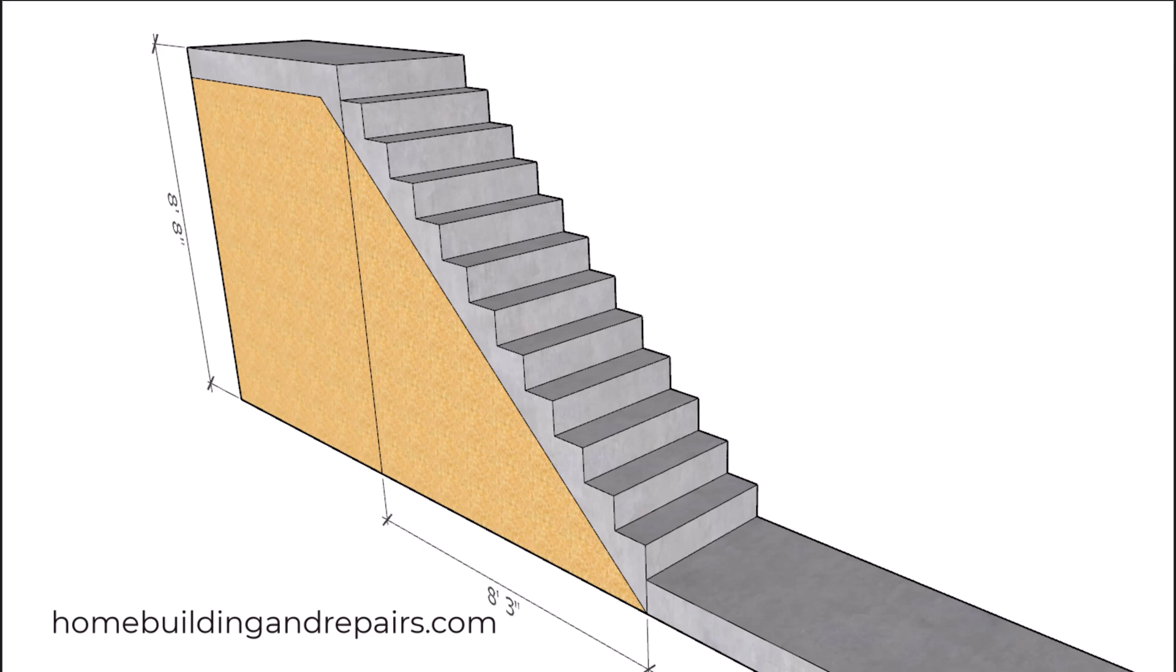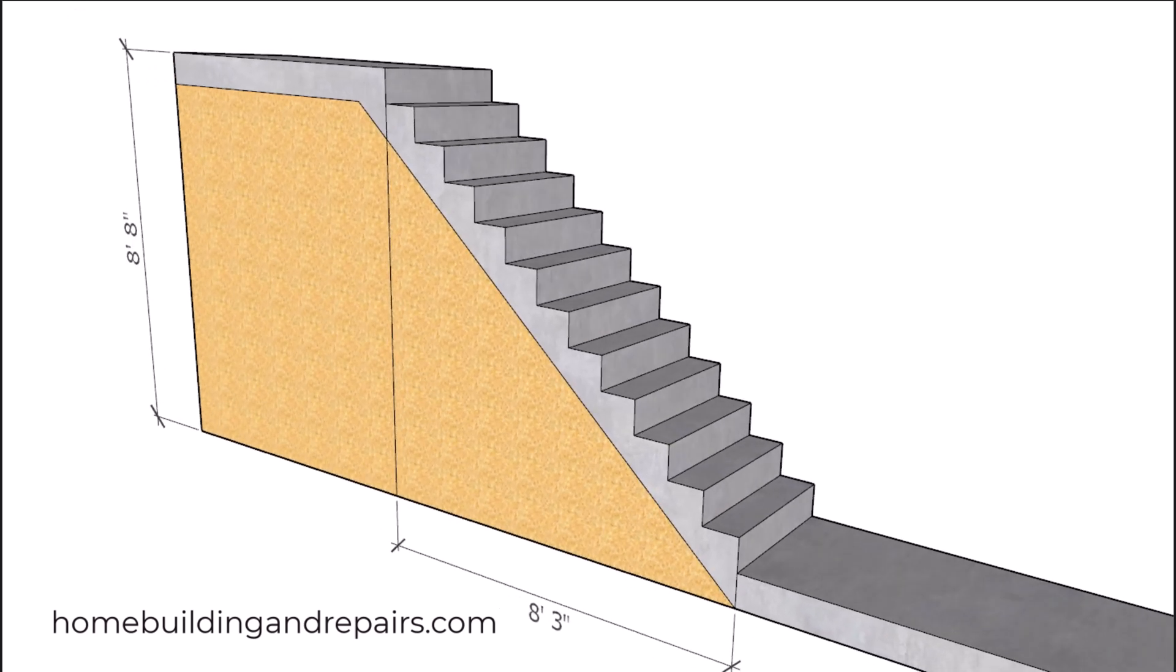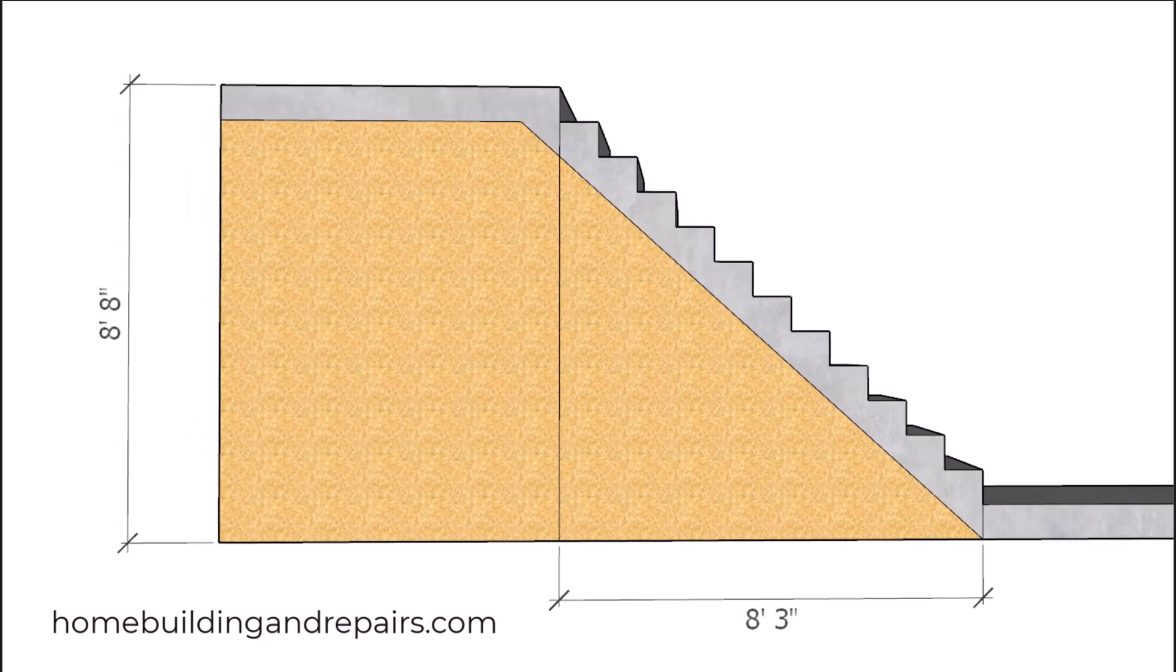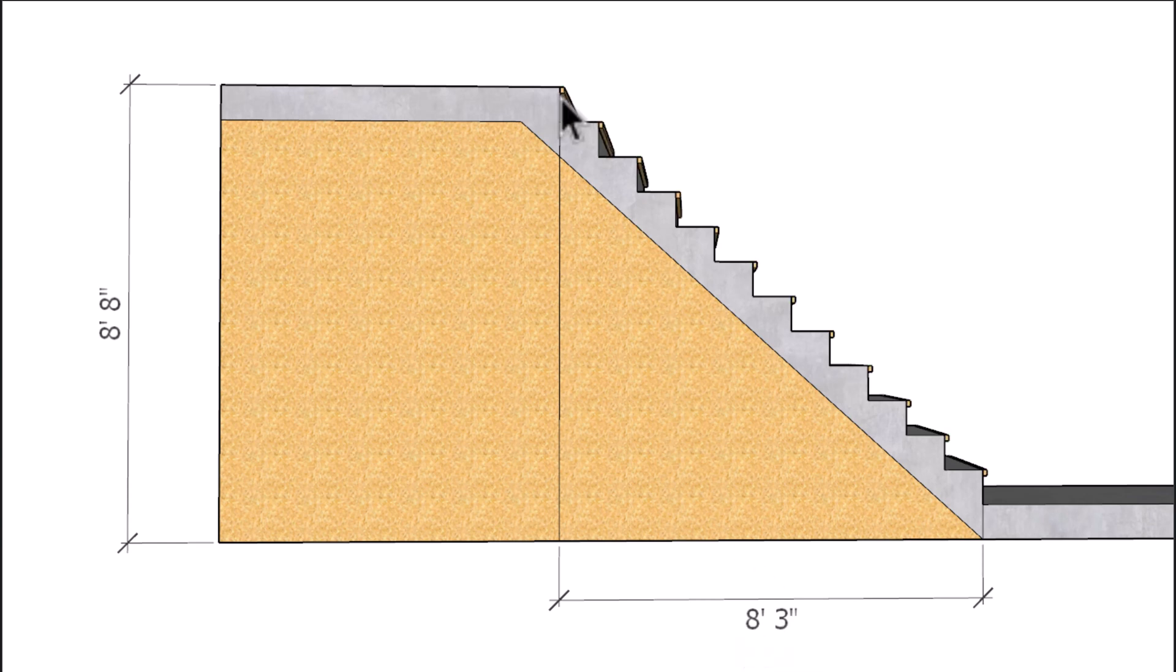Here is another attempt to explain how stairs with small steps and tall risers might be difficult to fix. Let's get started with a stairway that has nine-inch wide steps and eight-inch tall risers. You can see the length of the stairway is eight feet three inches. If I add a one-inch nosing to each step, I'm not going to change the length of the stairway.